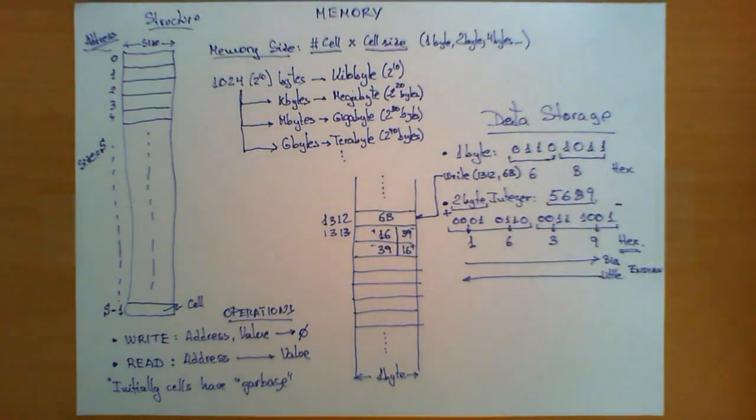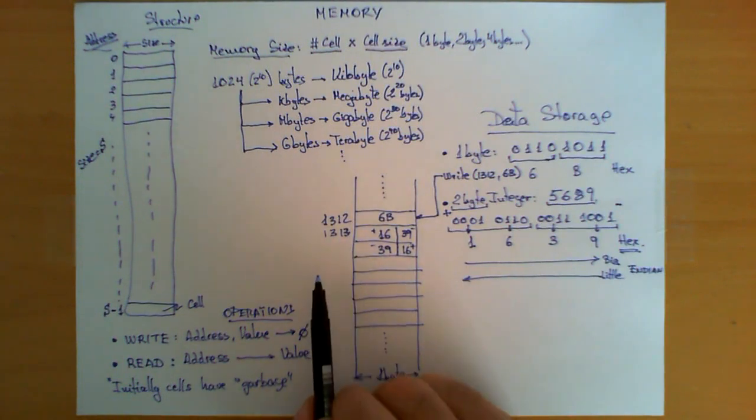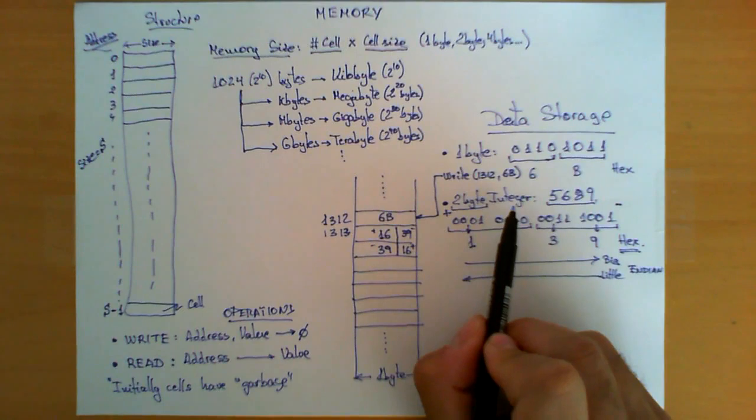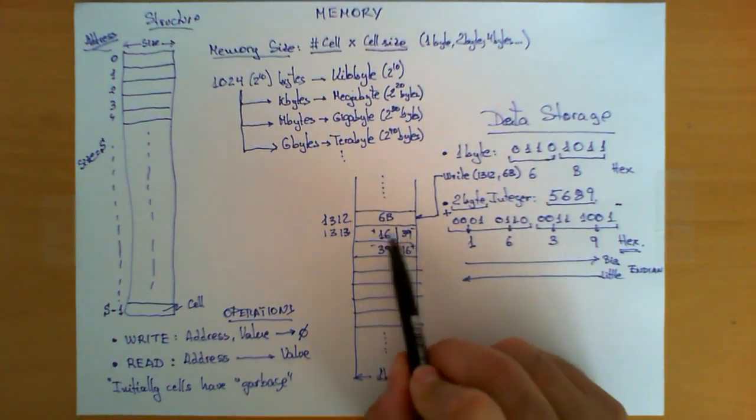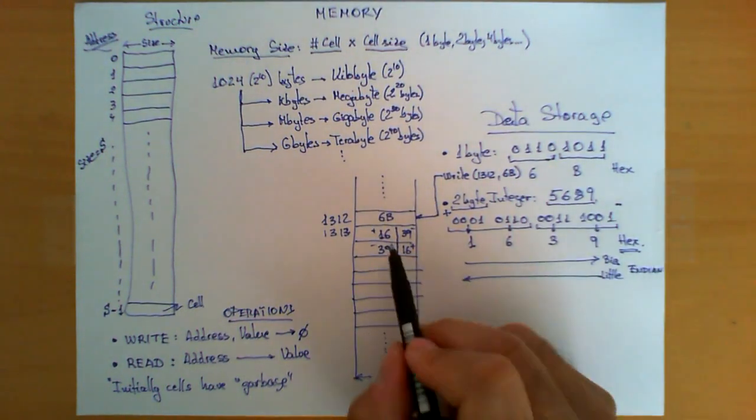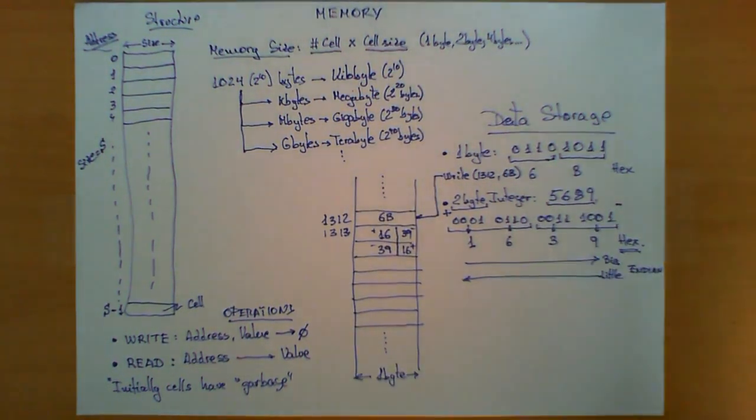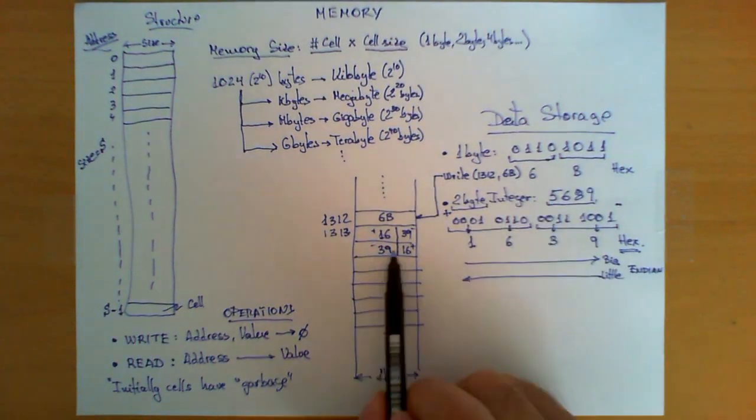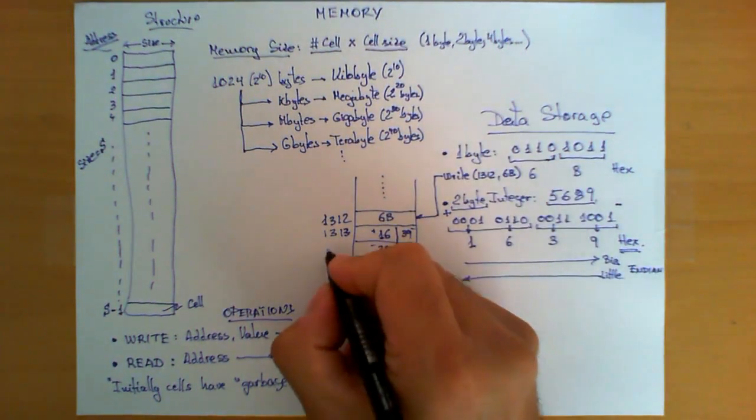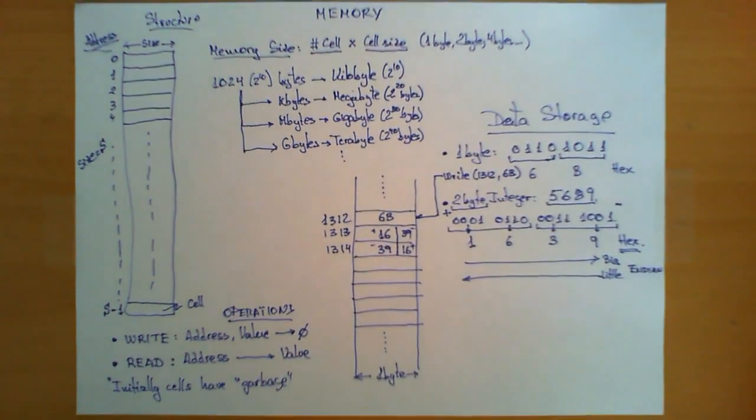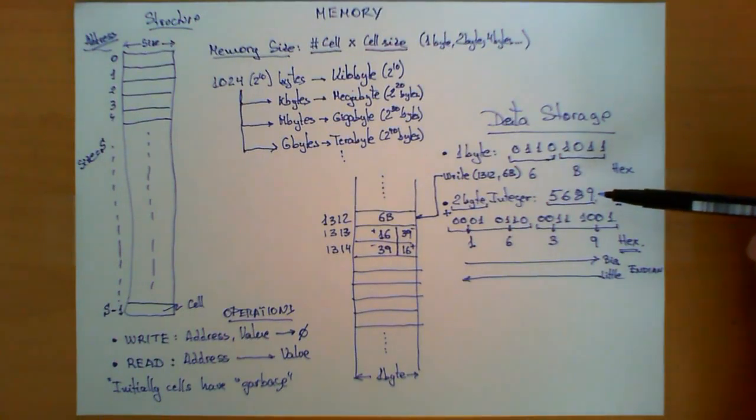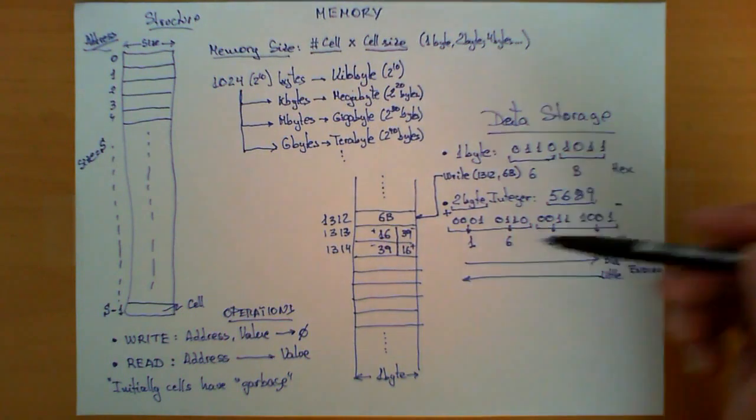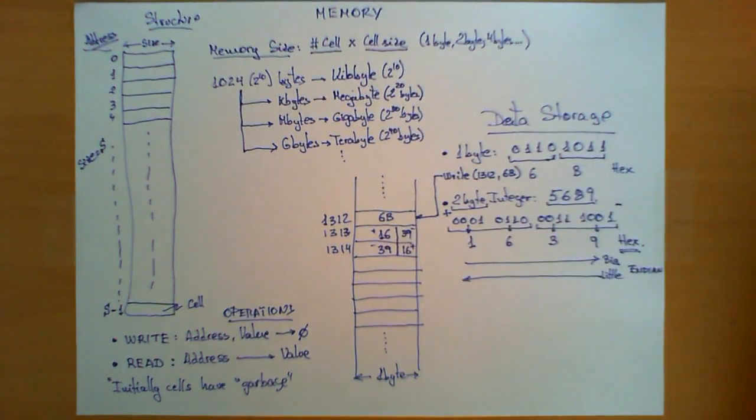The trick to remember is that big or little endian is always referring to the first byte that is being stored. What does it matter? If I tell you that in position 1313 I have previously stored a two-byte integer, then I need to tell you also if the policy is little or big endian, so you know which is the right order to get your bytes. The important thing to remember is that the two-byte integer takes two consecutive cells in memory.